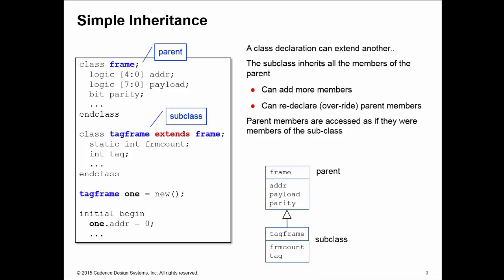Whether it comes from the TagFrame class or whether it's inherited from the Frame class, what we've done here with inheritance is basically create a new conceptual class called TagFrame which contains all the declarations from the parent class frame as well as the local declarations of frame count and tag from TagFrame.